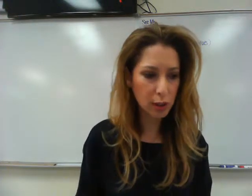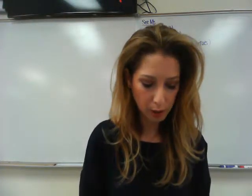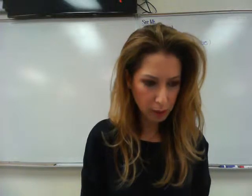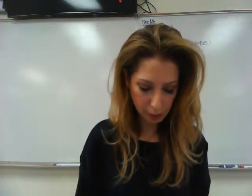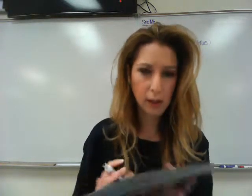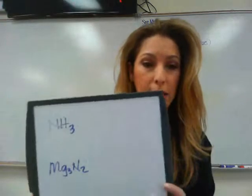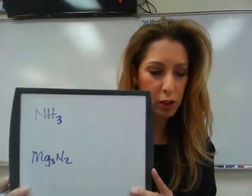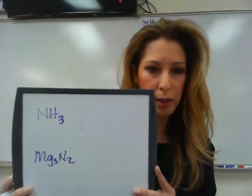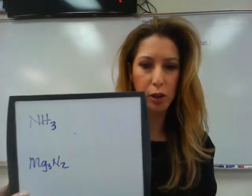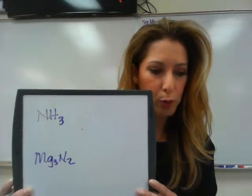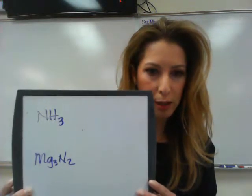Looking at student exercise number one, with NH3 and MG3N2 as examples of compounds, we want to know which one has covalent bonds and which one has ionic bonds. NH3 is nitrogen and hydrogen, which are nonmetals, and so therefore it will have covalent bonds.